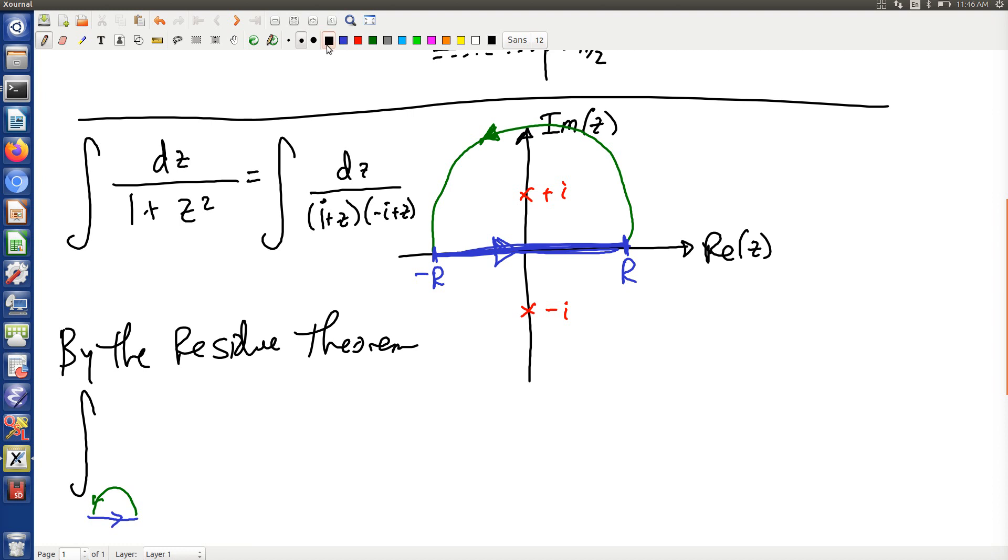...provided we're far enough out there, but really not mattering what the r is, by the residue theorem, that's 2 pi i times the residue of our function at z equals i.